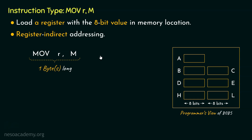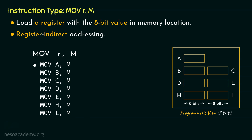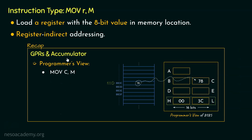Notice we have R in the instruction type, so how many instructions will there be for this particular type? Well, 7 — because MOV A,M, MOV B,M, through MOV L,M are all different instructions of this type. Now don't you think this instruction type is a bit familiar? If you remember, we already used the instruction MOV C,M when we were learning about the GPRs and the accumulator.